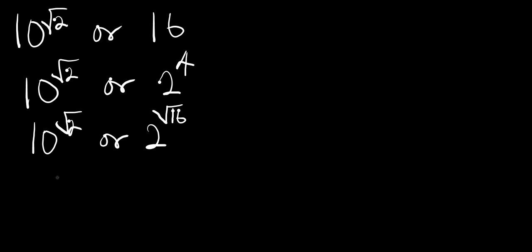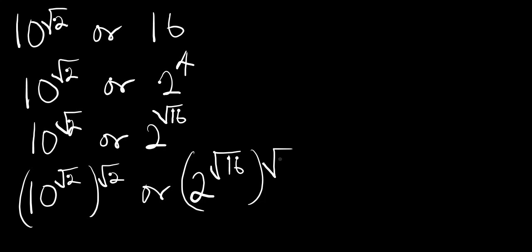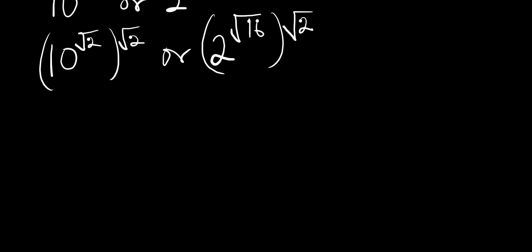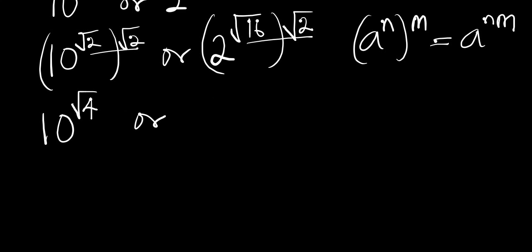In order to eliminate the √2 here, we raise both sides to the power of √2. Using the identity that (a^m)^n equals a^(n×m), we multiply the exponents. So we have 10^(√2 × √2) = 10^(√4) versus 2^(√16 × √2) = 2^(√32).